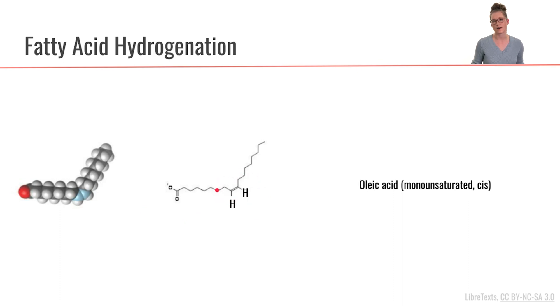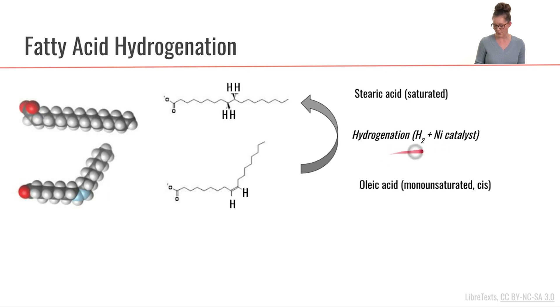If we go through the process of hydrogenation where we add hydrogen gas and then we also use nickel as a catalyst, then we can add hydrogens to where there was previously a double bond and now we can make it a completely saturated fatty acid. This would yield stearic acid, a saturated fatty acid.